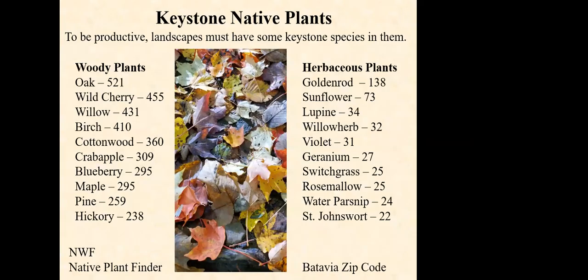Not all native plants are created equally. Some plants support many times more insects than other natives. Putting just one of those plants in your garden or landscape can support hundreds of species, especially of moth and butterfly — especially the caterpillars. And of course, trees because of their biomass can support way more insects than herbaceous plants.